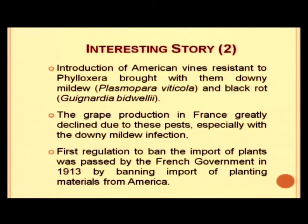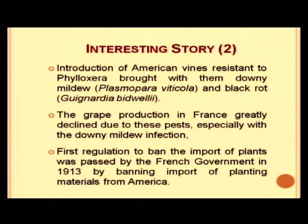Grapevine production in France greatly declined due to these pests, primarily because of downy mildew infection. Trying to escape one problem brought new problems to their grapevine crops, and this led to the first regulation banning the import of plants, passed by the French government in 1913, banning import of planting materials from America.